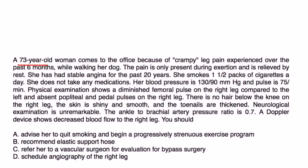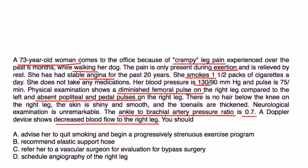Clinical vignette: A 73-year-old woman comes to the office because of crampy leg pain experienced over the past six months while walking her dog. The pain is only present during exertion and is relieved at rest. She has had stable angina for the past 20 years. She smokes one and a half packs of cigarettes a day. She does not take any meds. Blood pressure 130 over 90, pulse 75. Physical exam shows diminished femoral pulse on the right leg compared to the left, absent popliteal and pedal pulses on the right leg. There's no hair below the knee on the right leg. Skin is shiny and smooth, toenails are thickened. Neurologic exam is unremarkable. The ankle-to-brachial artery pressure ratio is 0.7. A Doppler device shows decreased blood flow to the right leg. You should...